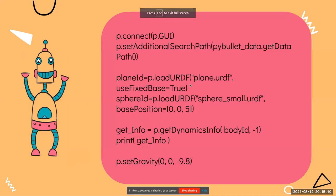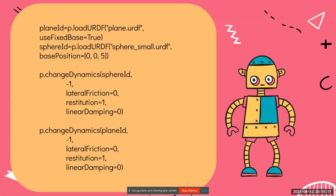That's the same code before applying the dynamics — the ball sticks to the ground — and here it is after changing these physical parameters, which we want in our virtual world to make it act like the real world in the way we want.